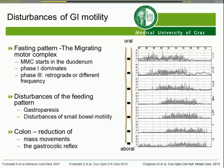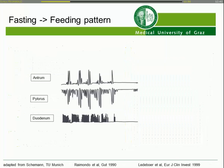Phase three expels food remnants back to the small bowel. We also have disturbances of the feeding pattern, including gastroparesis and problems with small bowel motility. There are problems in the colon with reduction of mass movements and a significant reduction of the gastrocolic reflex. There is also a problem with the switch from the fasting to the feeding pattern.